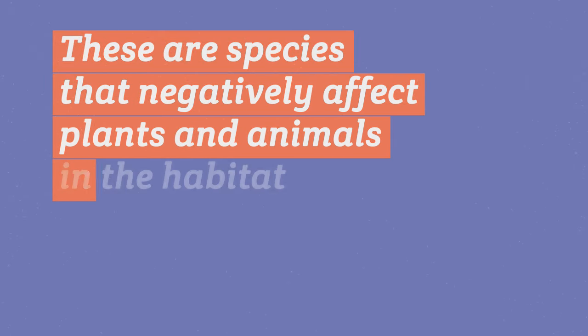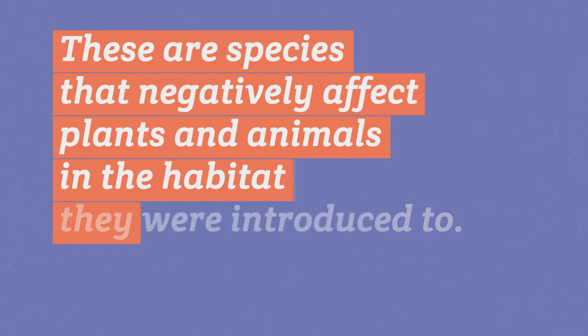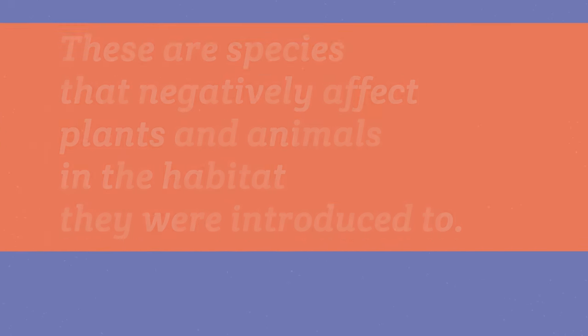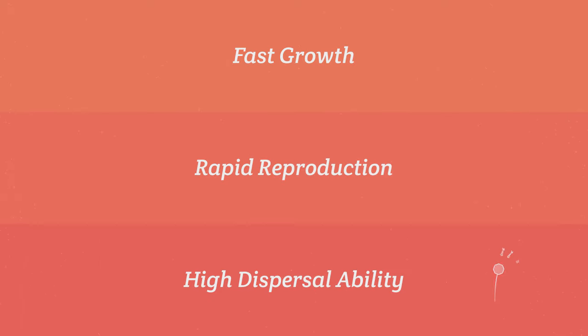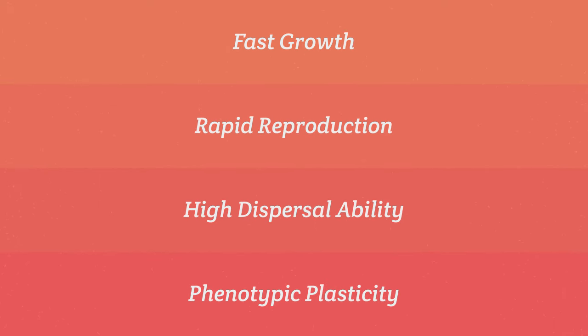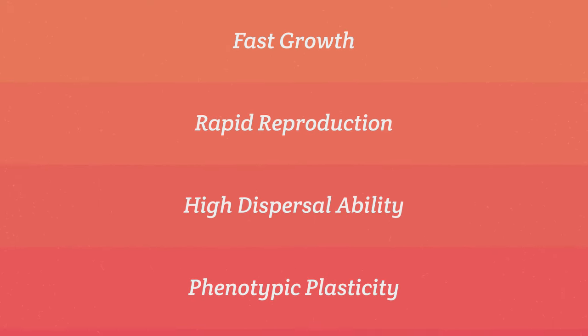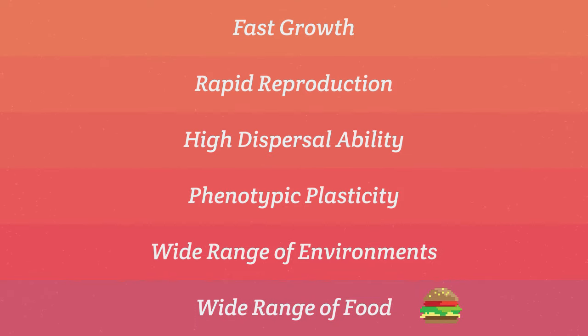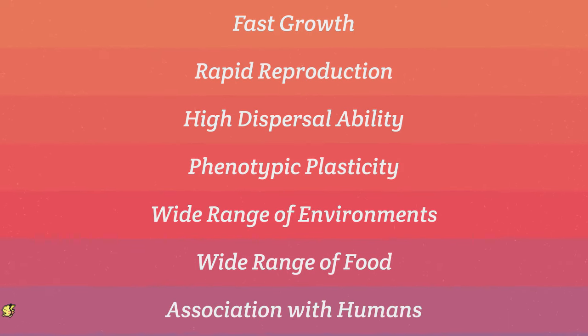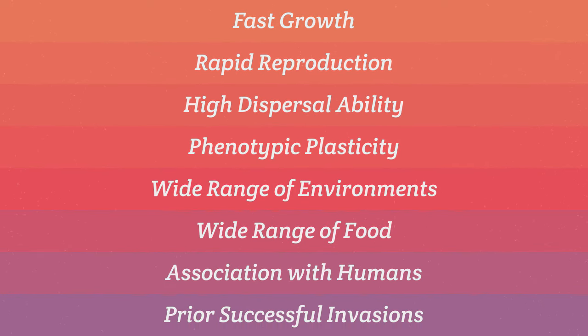These are species that negatively affect plants and animals in the habitat they were introduced to. Invasive species outcompete native species in a variety of ways. They can grow faster, reproduce more often with more offspring, disperse farther and faster, change form in case of hazardous surroundings, tolerate a wider range of environments, live off more sources of food, associate with humans, or have prior successful invasions.